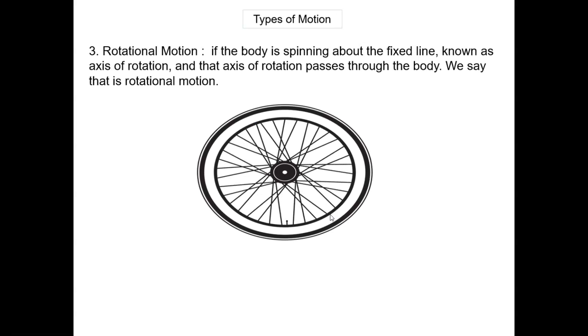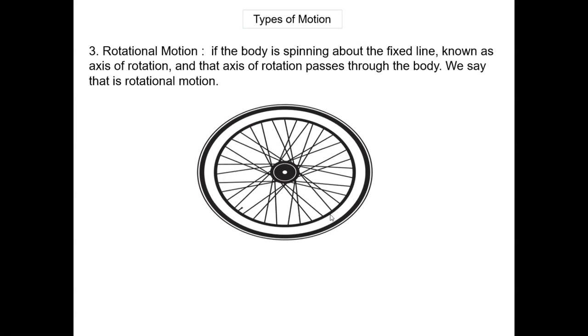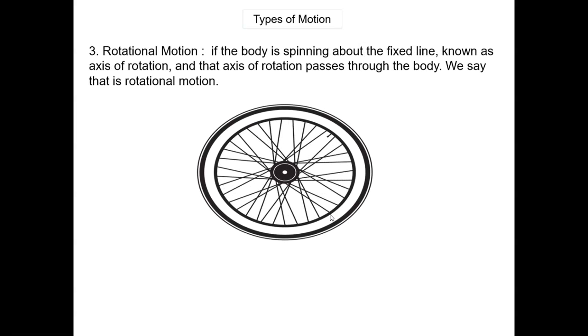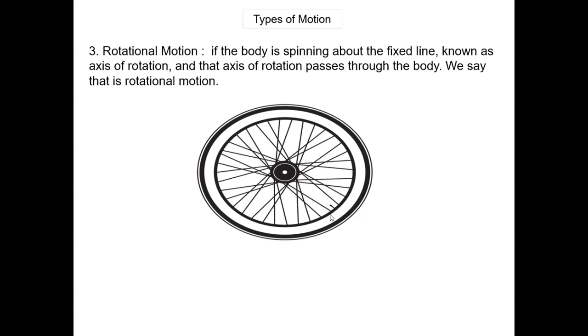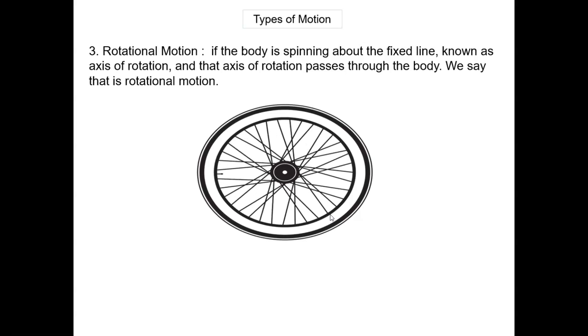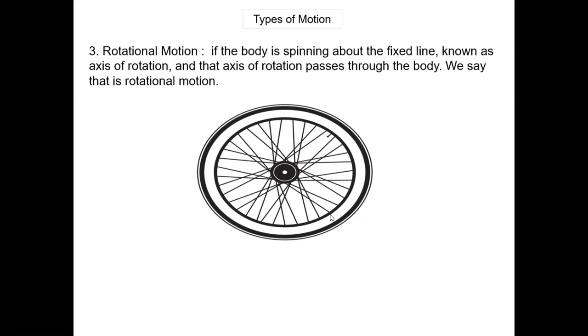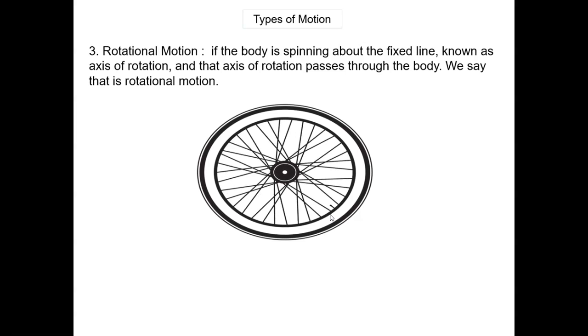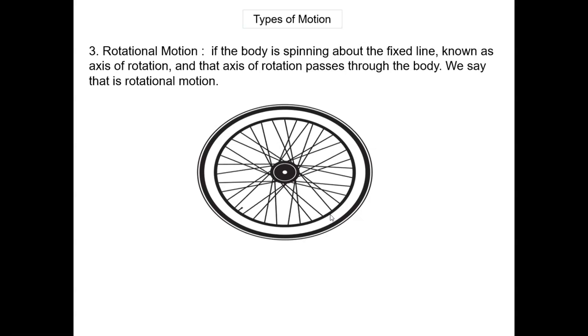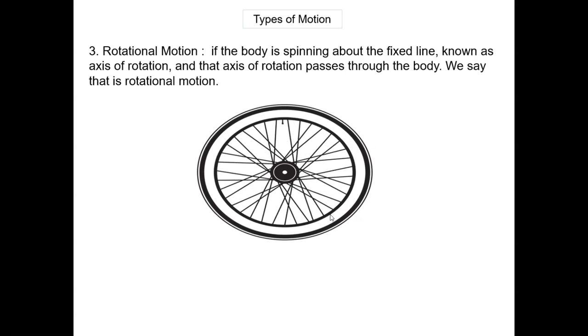Rotational motion. If the body is spinning about a fixed line, that fixed line is known as the axis of rotation, and that axis passes through the body — we will say that is rotational motion.